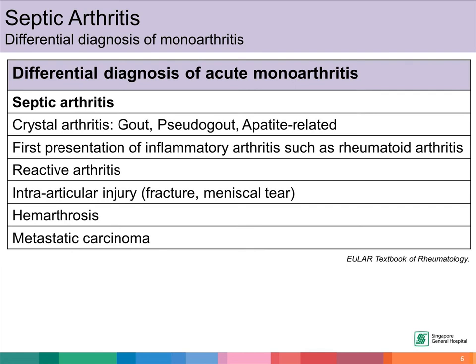There are several differential diagnoses of an acute monoarthritis. The most important is that we have to exclude septic arthritis in all cases of acute monoarthritis. Other possibilities that should be considered include crystal arthritis like gout, first presentation of an inflammatory arthritis like RA, reactive arthritis, and trauma-related joint problems.